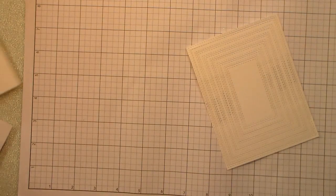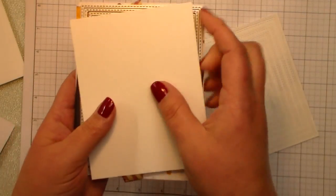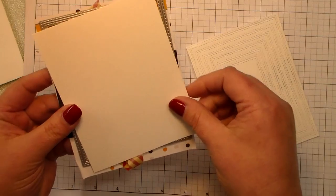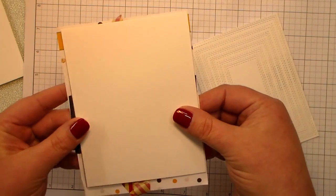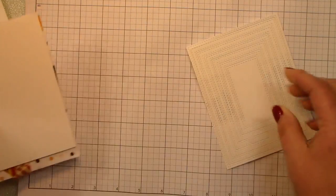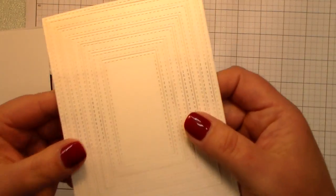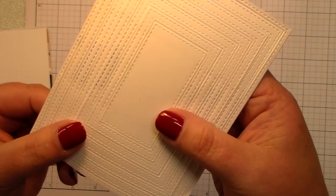Another thing you can do is run these through your die machine all together. I just layered my cardstock over the top of my taped dies, and I got an awesome set of frames.